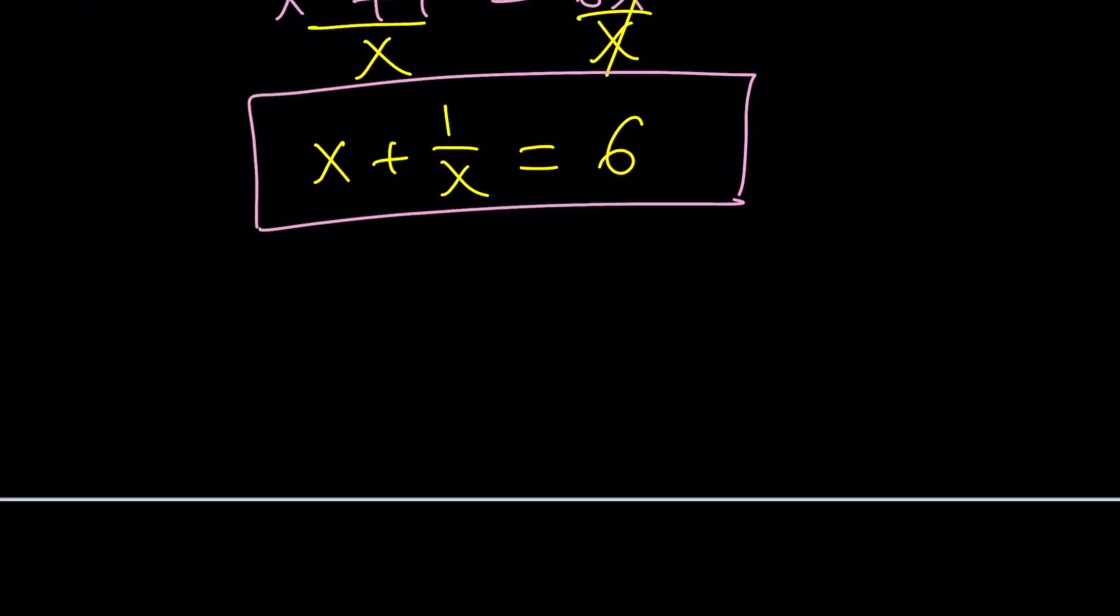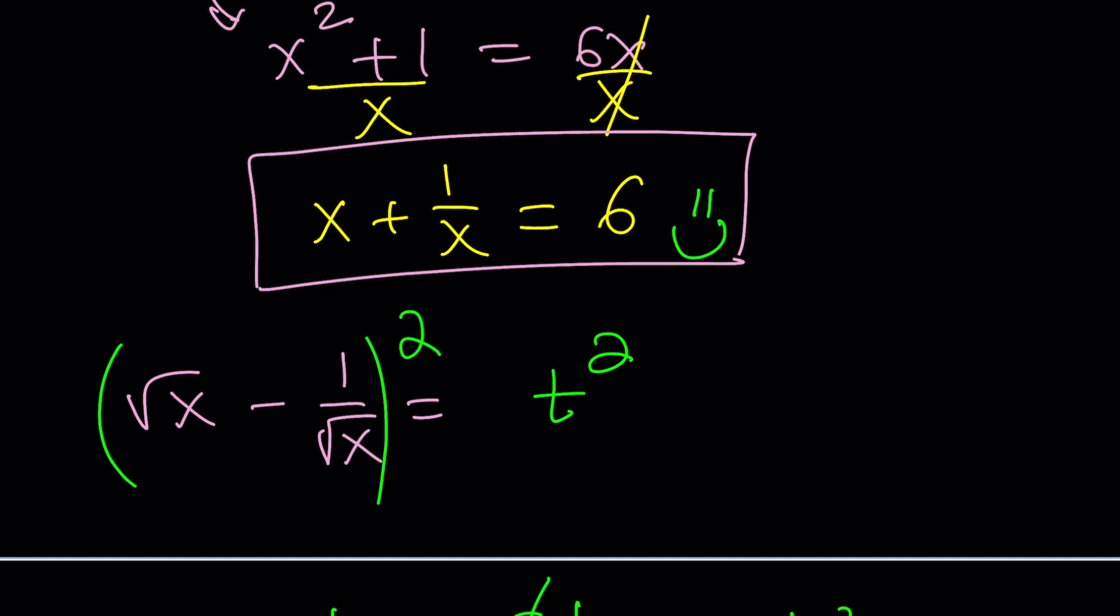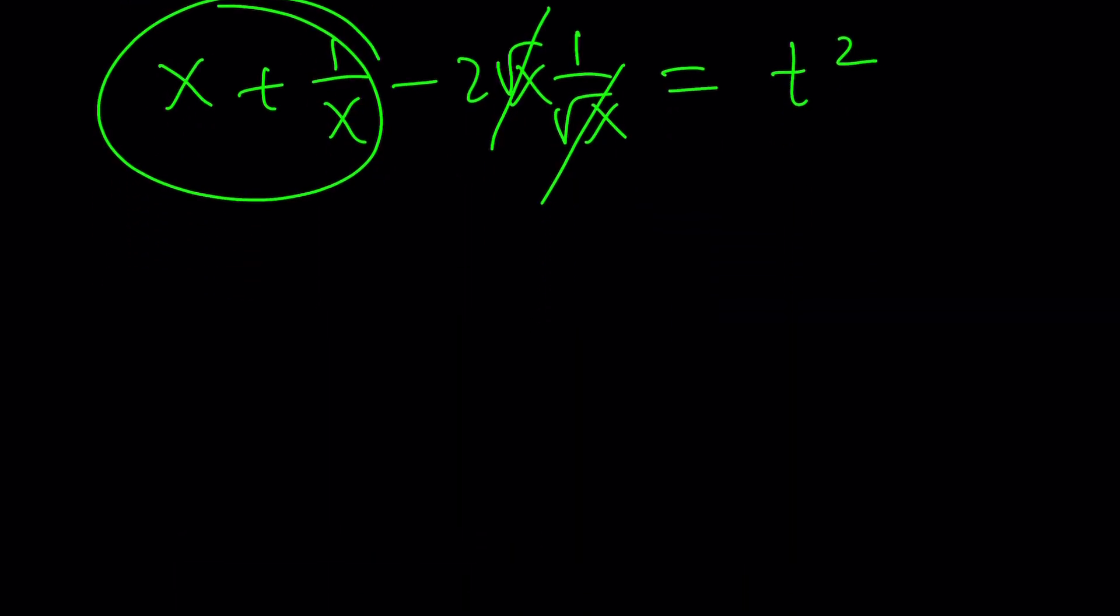So we got something nice, but how do we use that? What are we supposed to find? We're supposed to find square root of x minus 1 over square root of x. How is that great? Well, whatever you're trying to find, you can set it equal to something, let's say t, and then square both sides. Squaring both sides is going to be super helpful because this is going to give you x plus 1 over x minus 2 times ab. And then these two are going to cancel out, leaving us with t squared. And x plus 1 over x, we already know that it's 6, so we can plug it in. 6 minus 2 is equal to 4, so t squared equals 4. From here, we get two solutions: t equals 2 or t equals negative 2.